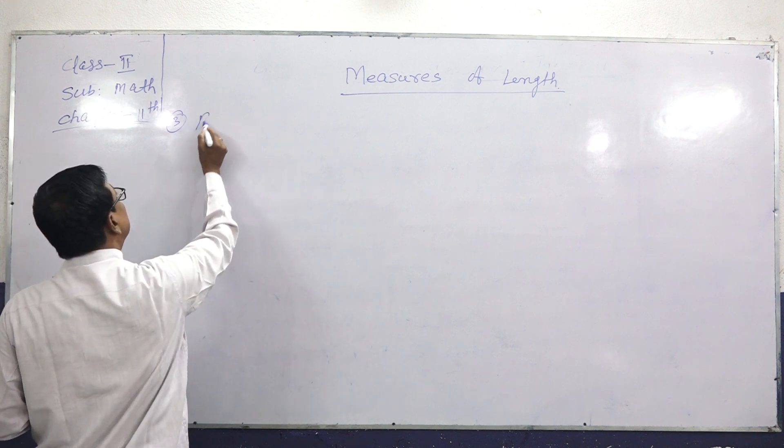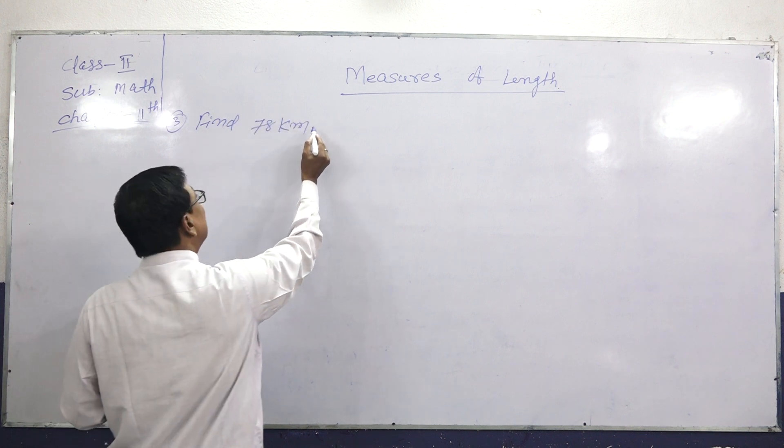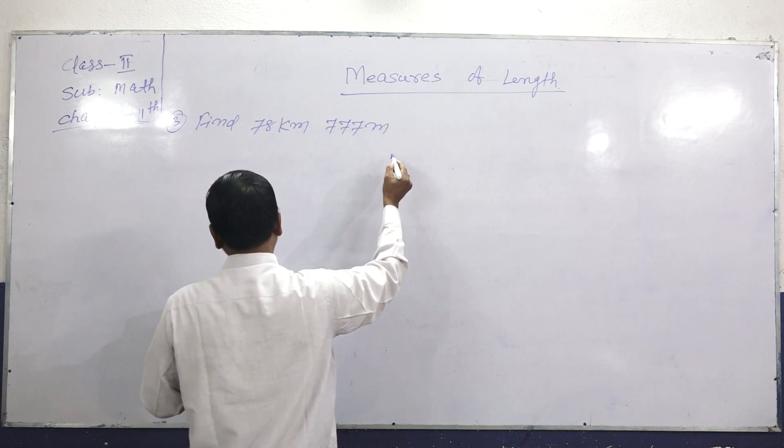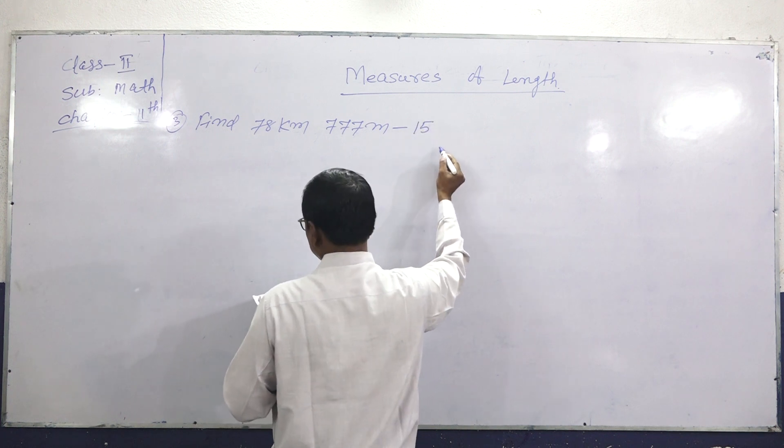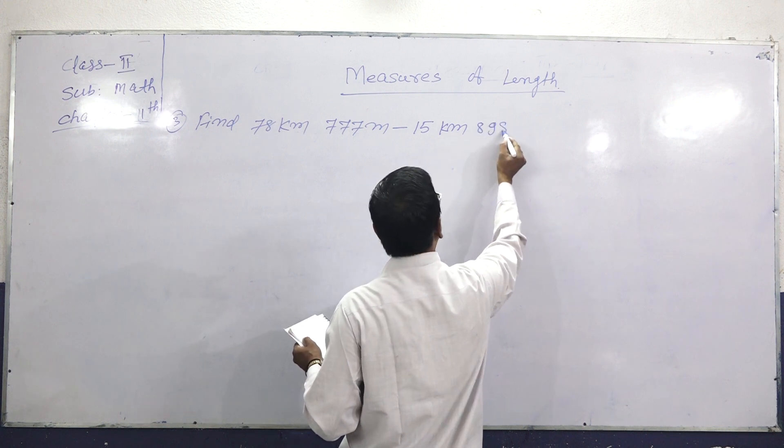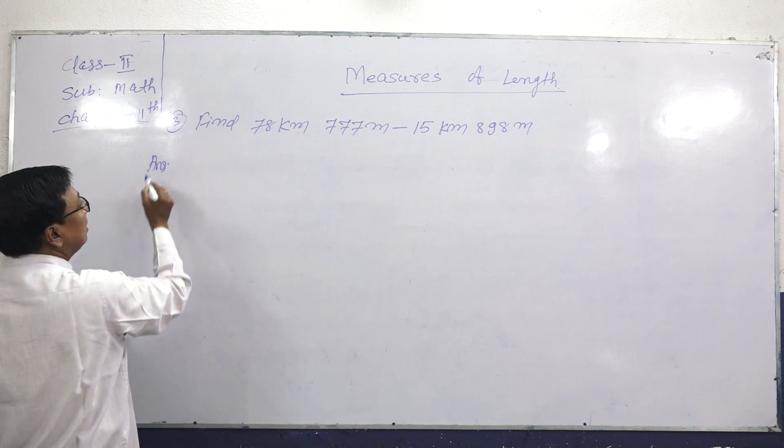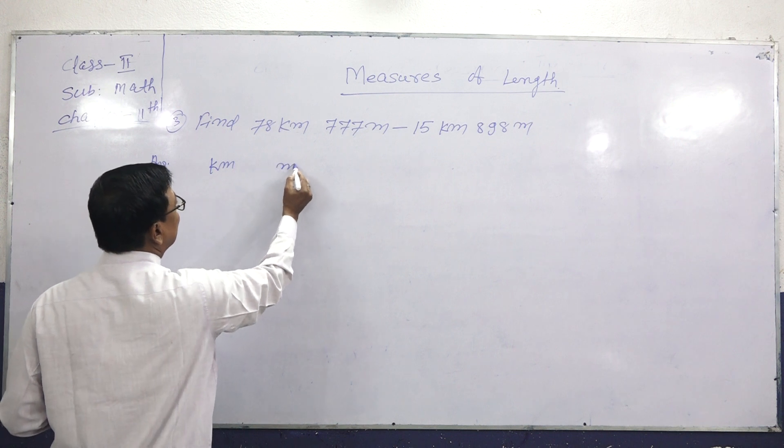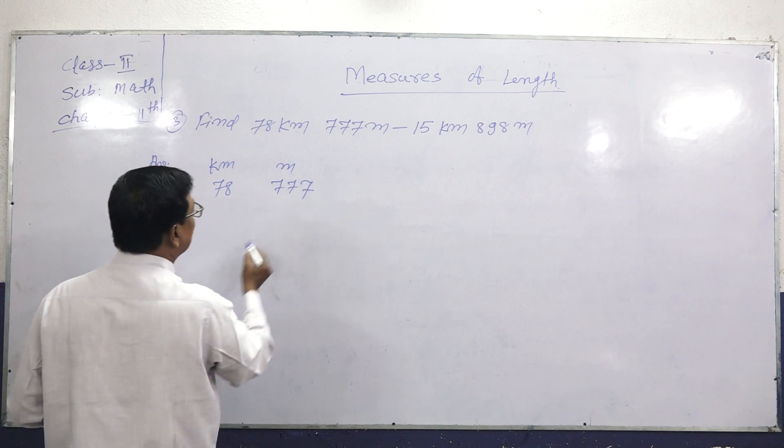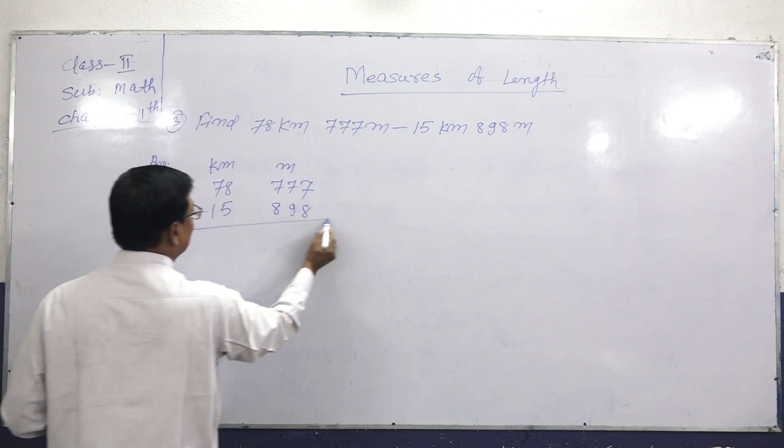Next question. Subtract 78 kilometers, 777 meters minus 15 kilometers, 898 meters. Let's write: 78 kilometers 777 meters subtract 15 kilometers 898 meters.